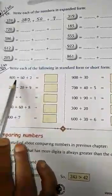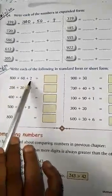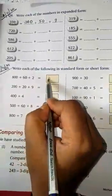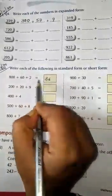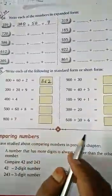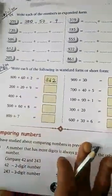Now here you see 800 plus 60 plus 2. So the answer will be: 8 is in hundreds place, 6 is in tens place, and 2 is in ones place. So answer will be 862.